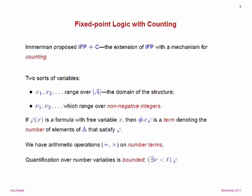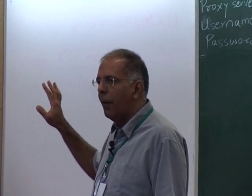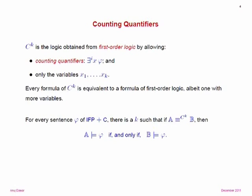What I'm going to do in the first half of this talk is tell you why IFP+C is too weak. We've learned a lot more about this over recent years, so I'll tell you what the original Cai-Fürer-Immerman construction was, but give a more detailed proof for a slightly different construction. To analyze the expressive power of fixed-point logic with counting, we look at a logic with a bounded number of variables, just as we did with IFP itself. You may be detecting a recurring theme here.